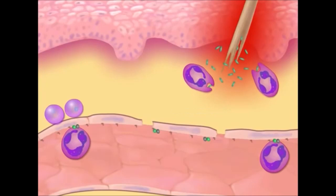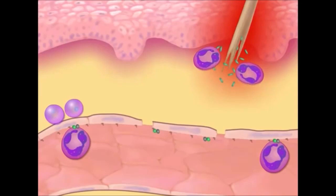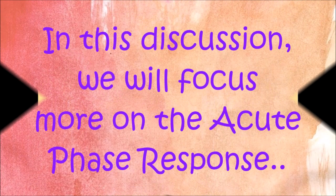The neutrophils, followed by other types of phagocytes, are attracted to the damaged site by chemotactic substances released by bacteria and tissue breakdown products. They ingest and destroy invading bacteria.